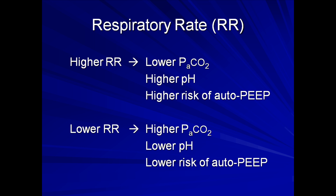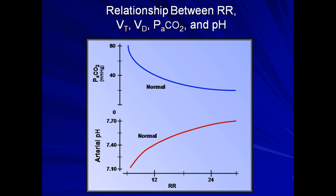Lower respiratory rates result in the opposite effects. Here is a graph of the relationship between respiratory rates and both PaCO2 and arterial pH. Either an increase in dead space ventilation or a decrease in tidal volume will result in a decrease in alveolar ventilation, which will shift the upper curve up and to the right — meaning maintenance of the same PaCO2 will require a higher respiratory rate. The same physiologic changes also result in a shift in the relationship between pH and respiratory rate, so a higher rate will be necessary to maintain a constant pH.